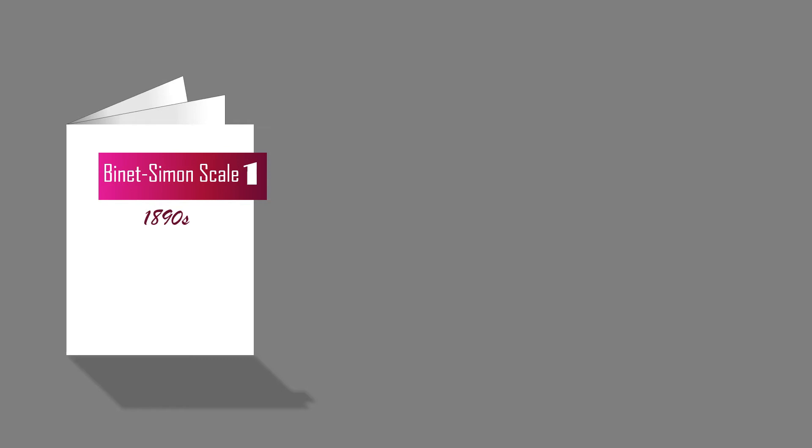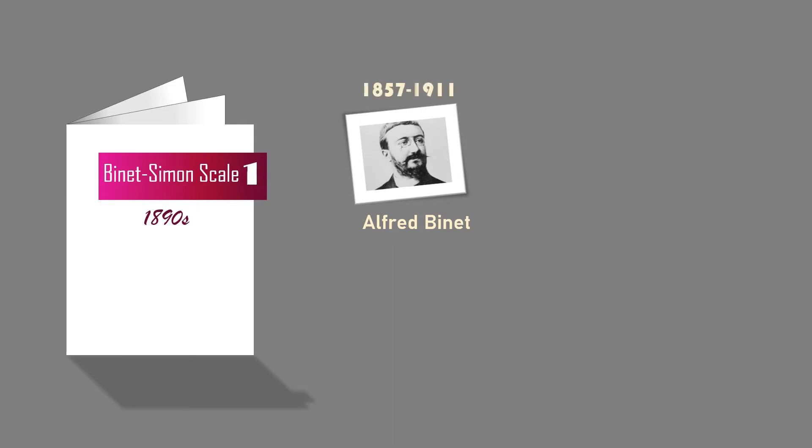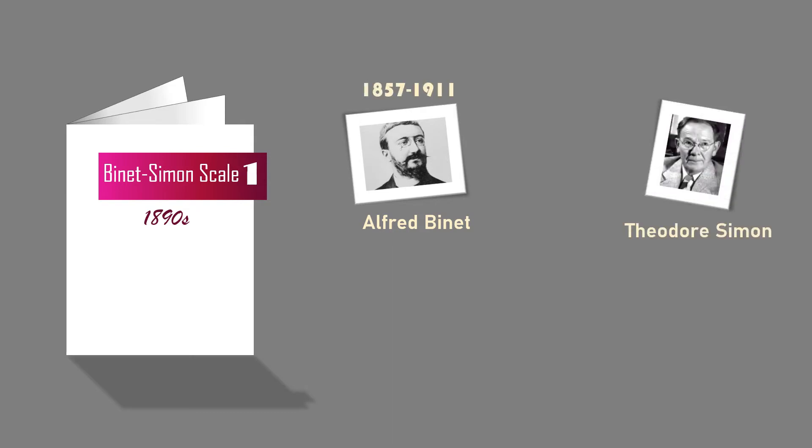Number one is the Binet-Simon scale, 1890s. The modern approach to understanding the concept of intelligence began with the work of Alfred Binet, a French ecologist from 1857 to 1911, and his colleague Theodore Simon from 1873 to 1961. Binet was hired by the Paris school system to develop tests that would identify children who were not learning and would not benefit from further education.